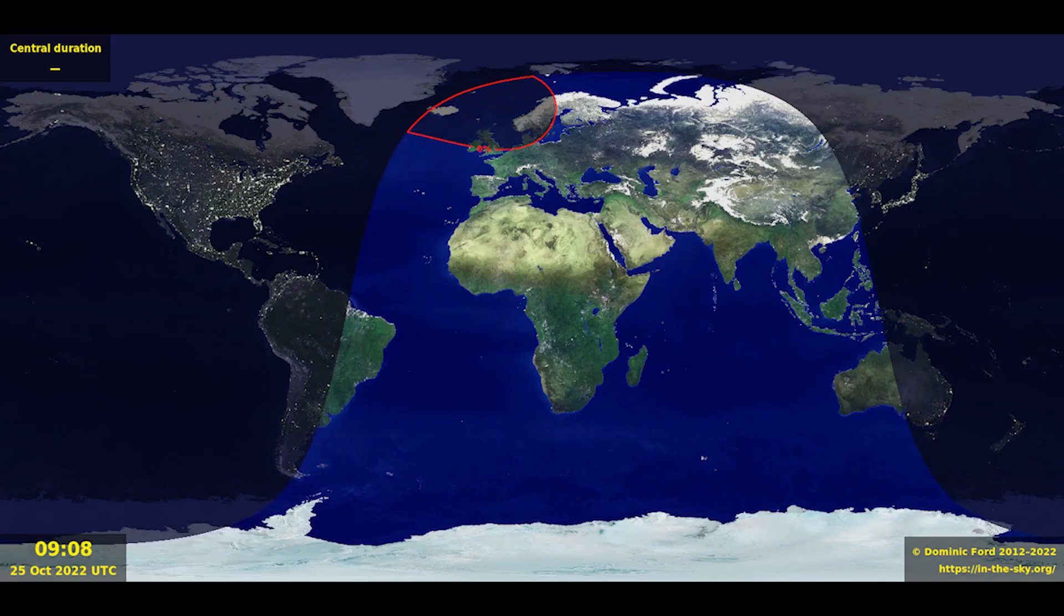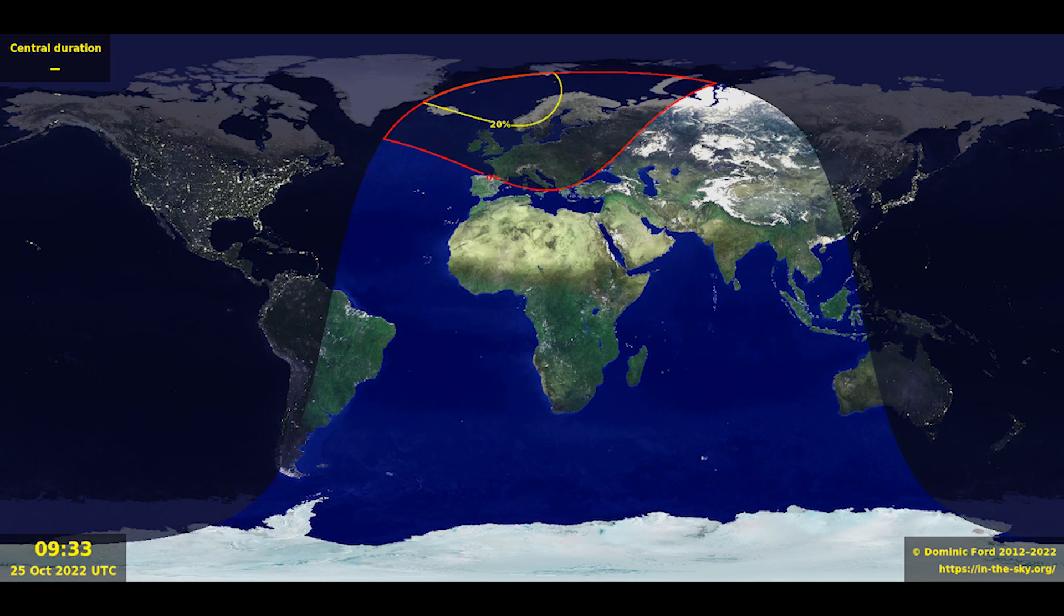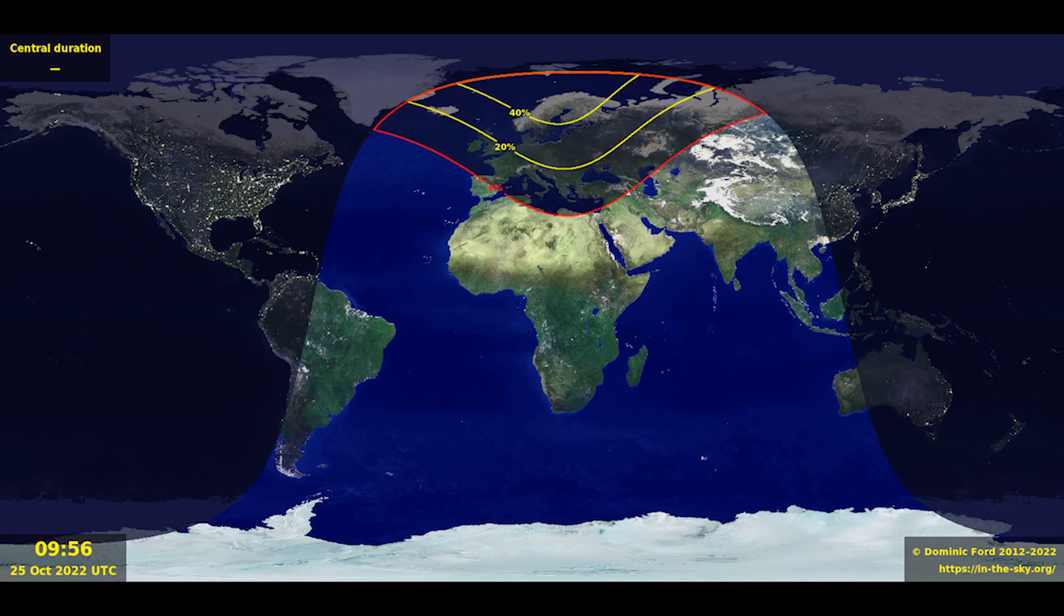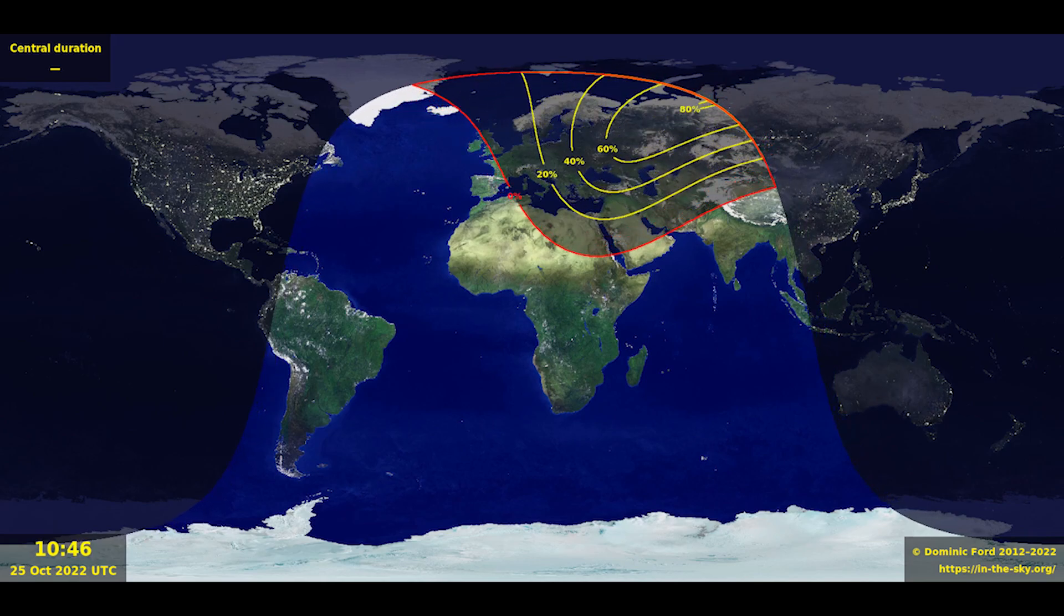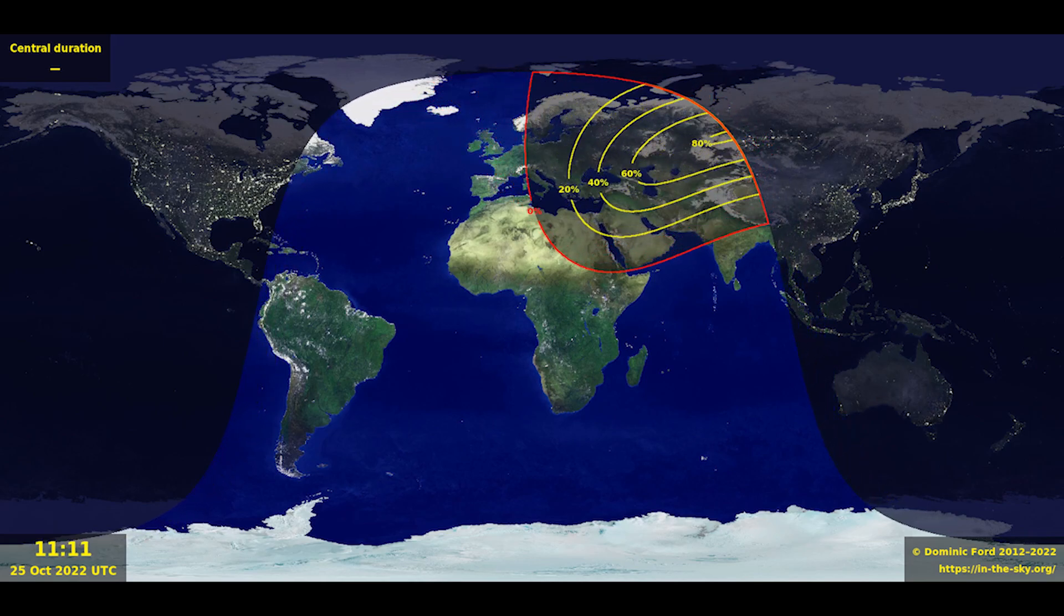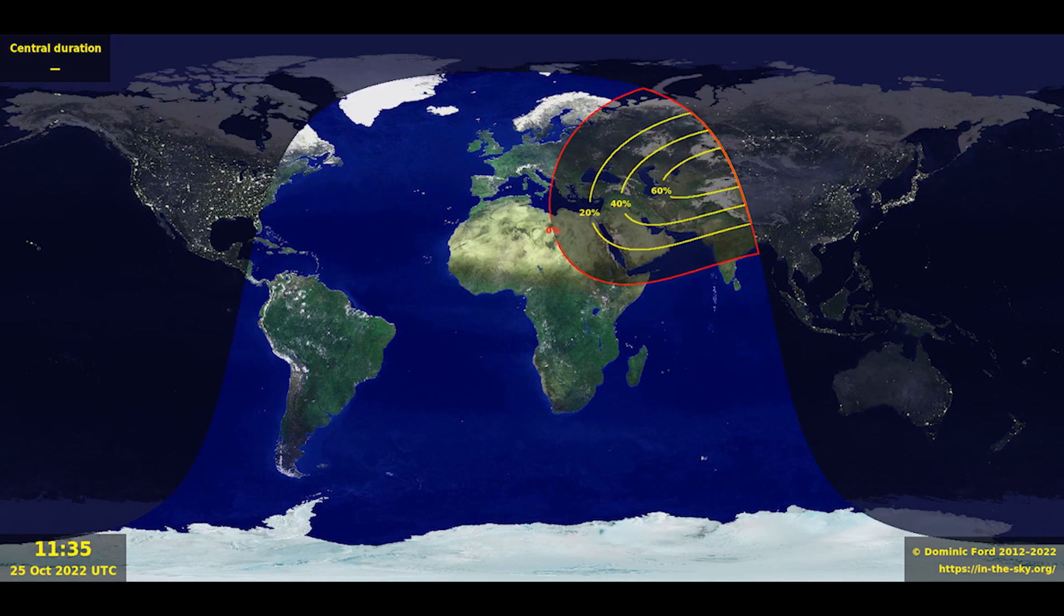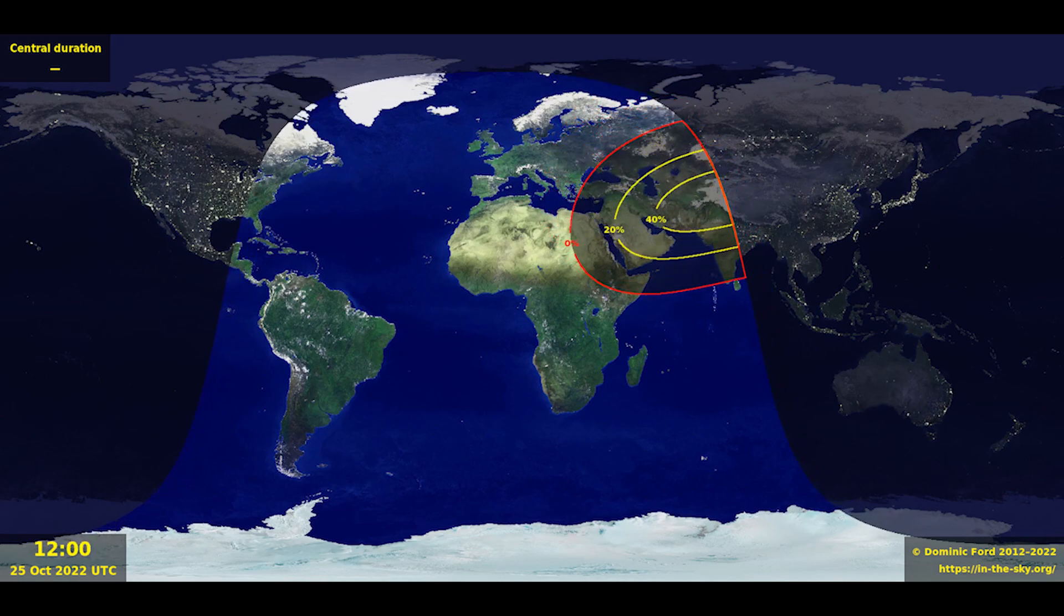The animation projects the path of the moon's shadow onto a map of the world. The red contour shows the edge of the moon's shadow and encloses the places where the eclipse can be seen. Within this, yellow contours show where various fractions of the sun's disk are covered.